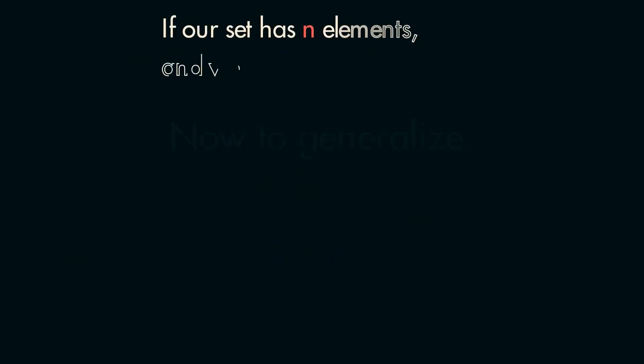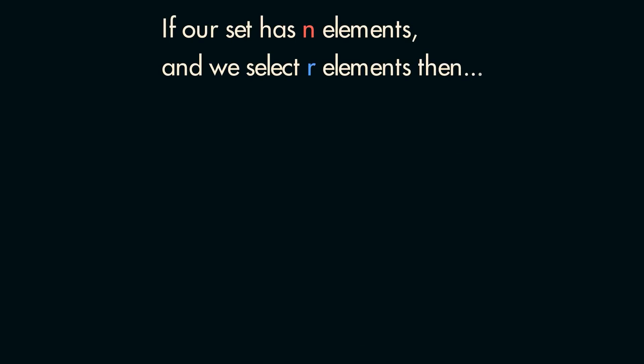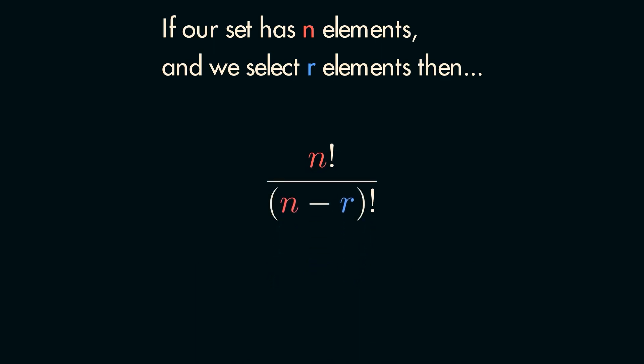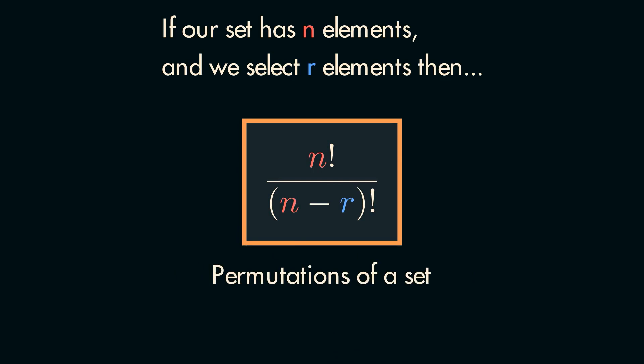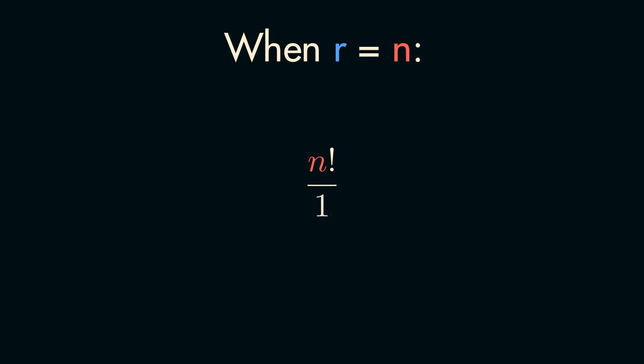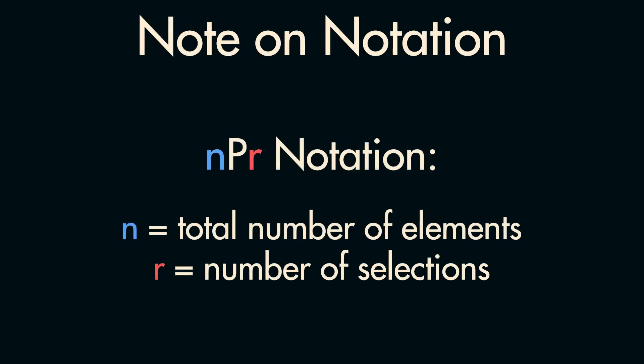To generalize: if the set we are choosing from has n elements and we are selecting r elements, we will start with n factorial in the numerator. Our denominator should be the factorial of the choices we are discarding, which we represent as (n − r) factorial. With that, we have just come up with a formula to calculate the number of permutations of a set. This formula still holds when finding the permutations of an entire set where r equals n, so the denominator equals 0 factorial, which equals 1, and we are simply left with n factorial. On notation: you will often see nPr notation, especially on calculators, where n is the total number of elements in the set you are selecting from and r is the number of elements you are selecting.